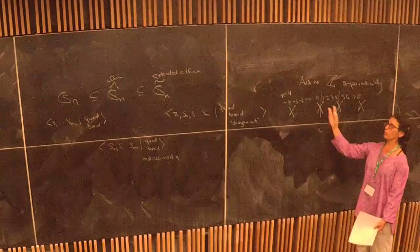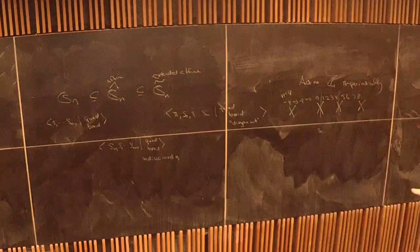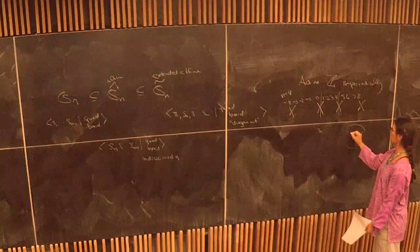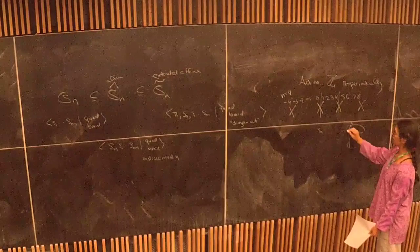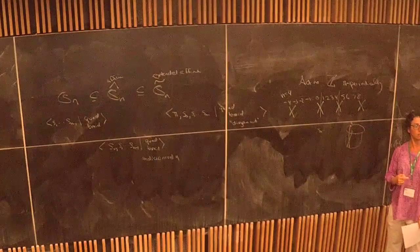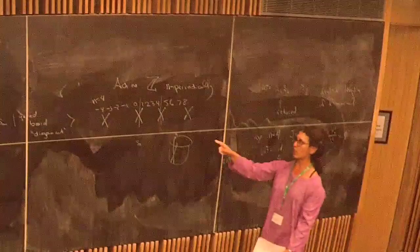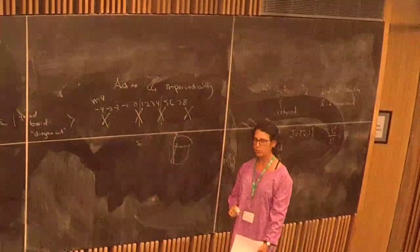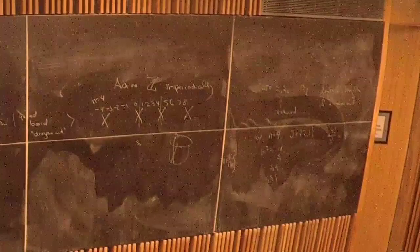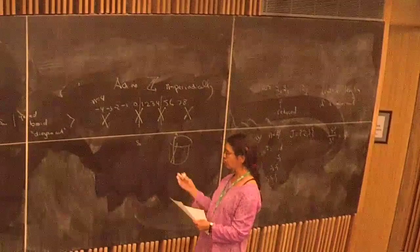S_0 satisfies the same quadratic relation as the other generators — it's a reflection. The braid relations hold with S_0 adjacent to S_{n-1}, so indices are taken mod n. S_0 acts on the integers n-periodically: if S_1 swaps 1 and 2 and S_2 swaps 2 and 3, then S_0 swaps 0 and 1 periodically. On the cylinder picture, S_0 swaps 1 and n around the back of the cylinder.